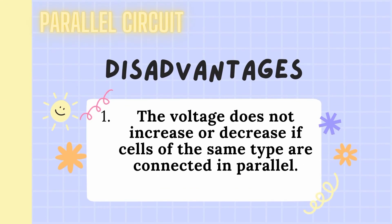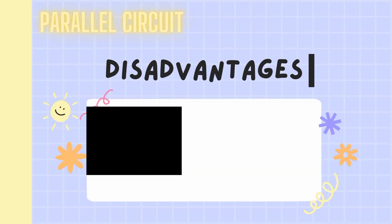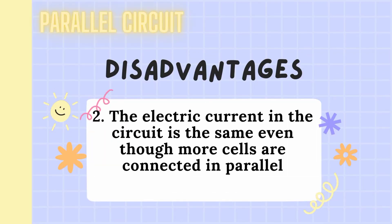Disadvantages of a parallel circuit. The voltage does not increase or decrease if cells of the same type are connected in parallel. The electric current in the circuit is the same even though more cells are connected in parallel.